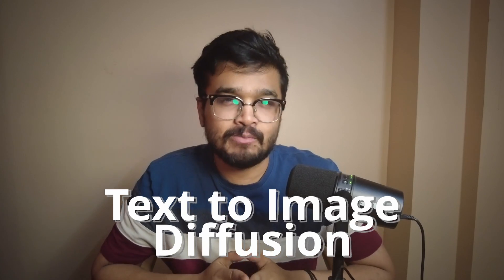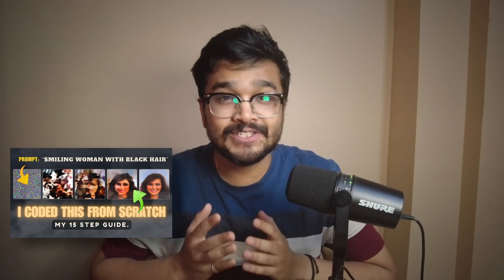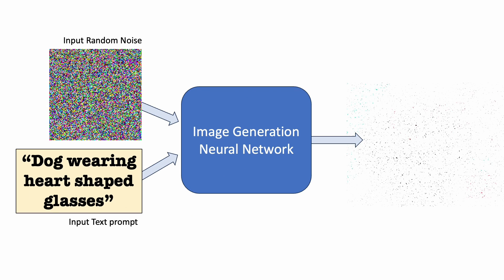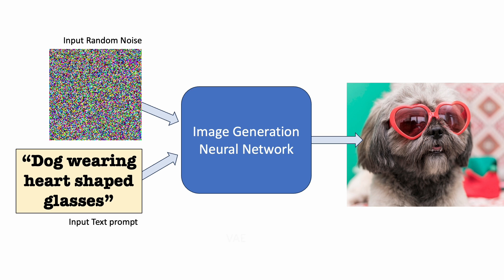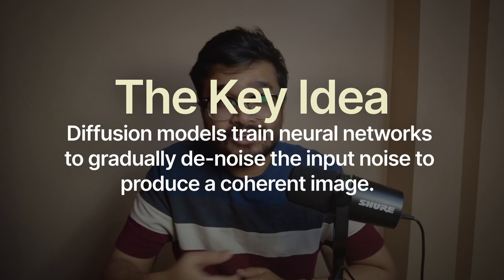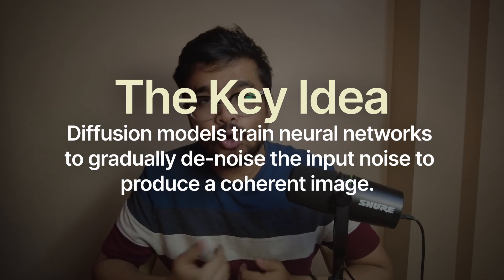Before talking about text-to-video, it is critical to understand how text-to-image diffusion models work. I have an entire video dedicated to this very topic where I implemented a human face generator from scratch, so go check that out for a longer explanation. But here I'll do a one-minute version of what diffusion is all about. All image generation AI models have one goal: input random noise and a prompt and output an image conditioned on your input prompt. VAEs, GANs, and diffusion all basically employ different algorithms to achieve this same task. The key idea behind diffusion models is to use neural networks to gradually denoise the input noise over several time steps to ultimately produce a coherent, clear image.